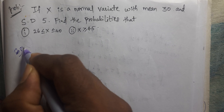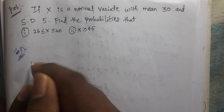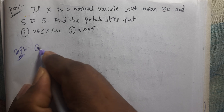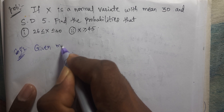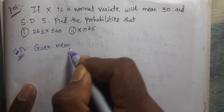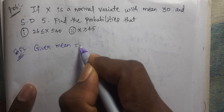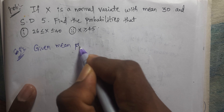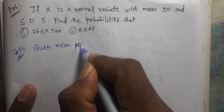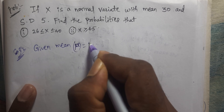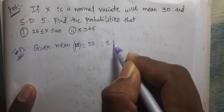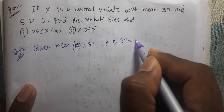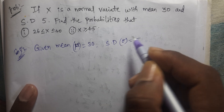The solution is given: mean mu equal to 30, standard deviation sigma equal to 5.